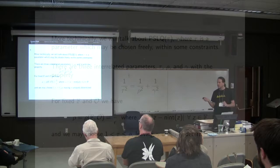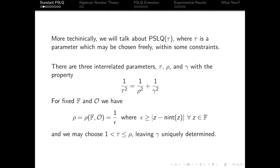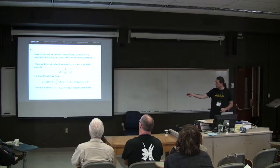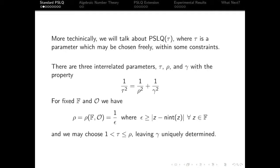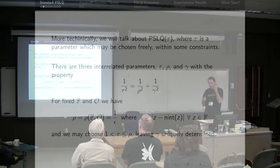So in order to understand this, we need to know about these three interrelated parameters, tau, rho, and gamma. They have this relationship here, this inverse square relationship. And rho is the one that's fixed. So long as we've actually fixed our input field and our output integer ring,